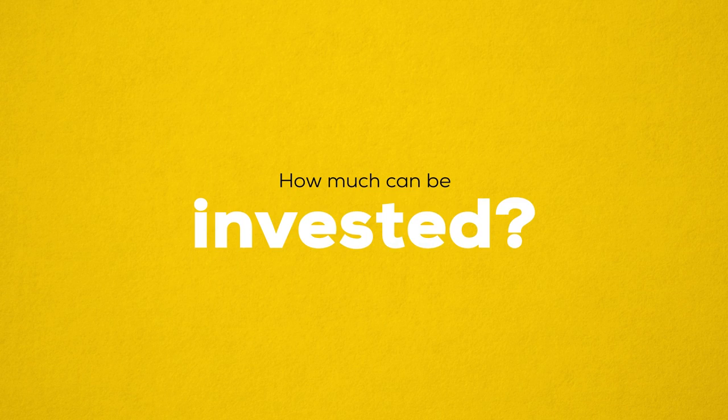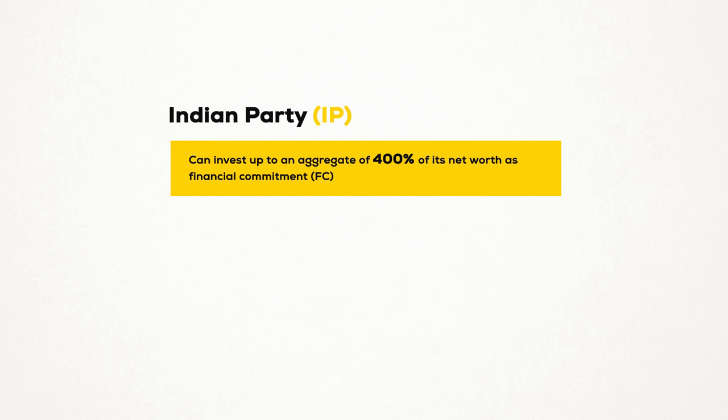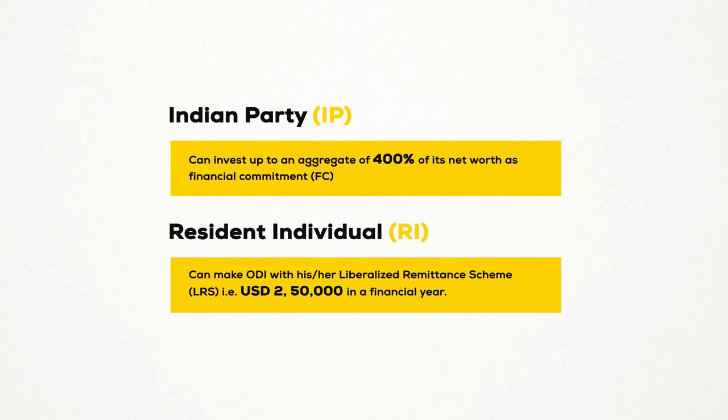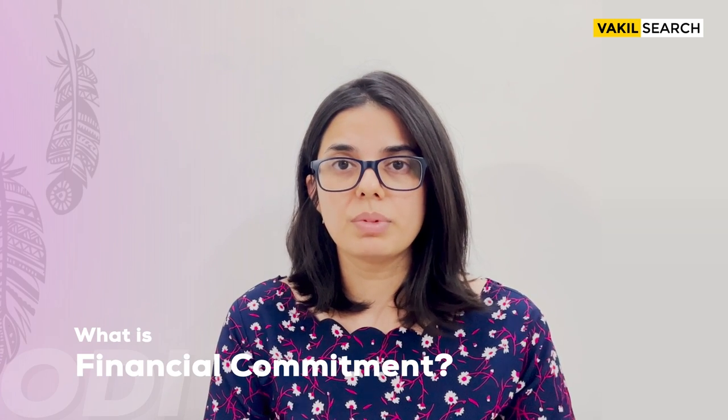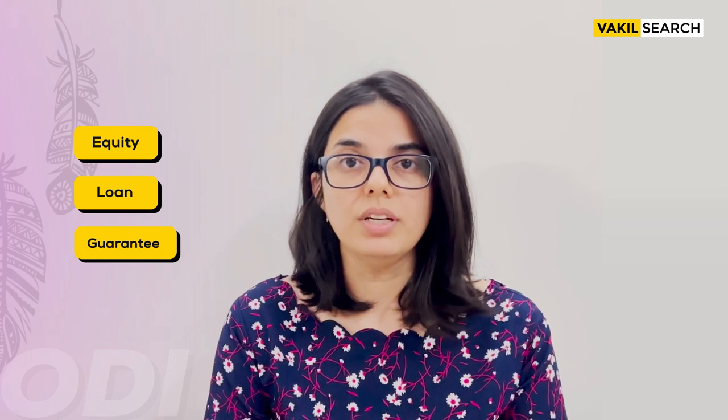How much can be invested? If I talk about Indian parties, they can invest up to an aggregate of 400% of their net worth as a financial commitment in their joint ventures and wholly owned subsidiaries. For resident individuals, they can make an ODI as per their limit prescribed under the LRS scheme — the Liberalized Remittance Scheme — which is USD 250,000 in a financial year. Financial commitment means any direct investment made in the outside entity by contributing to equity, loans, or guarantees given by the Indian company to or on behalf of the joint venture and wholly owned subsidiary.